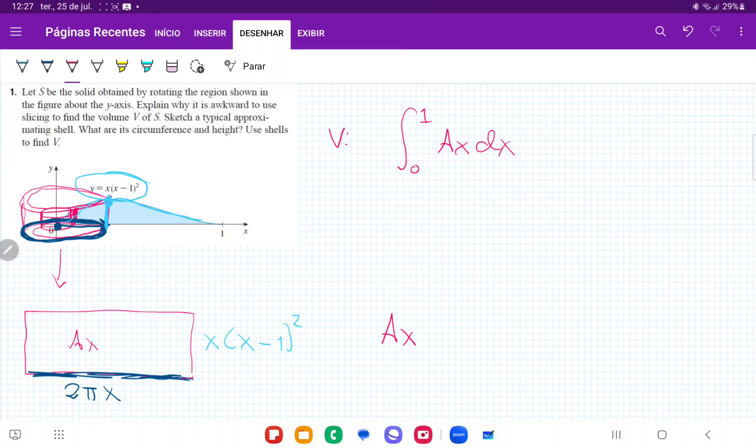Therefore, my A(x) is base times height. It's 2πx times x times (x - 1)², and so I'm just going to distribute this to make it easier, so that is A(x) is equal to 2π, that's x², and now I'm going to FOIL this guy out, so that is x² - 2x + 1.